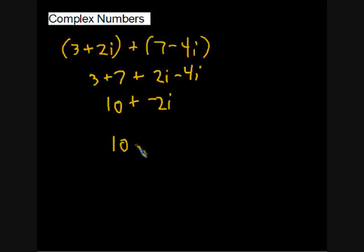And we'll clean that up and we'll write that as 10 minus 2i. So there we have it. That is how you add two complex numbers. Let's try subtracting.